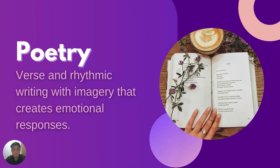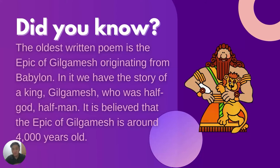After mythology, the next one is poetry — one of my favorites. It's about verse and rhythmic writing with imagery that creates emotional responses. Just like other literary forms, poetry hits the emotion of someone who reads and appreciates it. The oldest written poem is the Epic of Gilgamesh, originating from Babylon. In it we have the story of a king — Gilgamesh was half god, half man. It is believed that the Epic of Gilgamesh is around 4,000 years old.